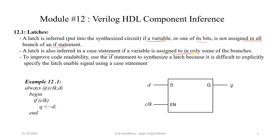I would like to mention two important points here. The first is intended latch inference and the second is unintended latch inference. In the first case we want a latch to be inferred from our RTL code; in the second case we do not want any latches inferred but they get inferred because of incorrect RTL coding. In this module our focus is how a latch gets inferred, whether it is wanted or unwanted — that is up to the RTL designer.